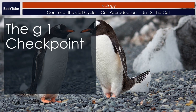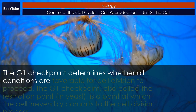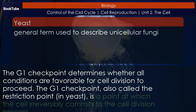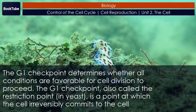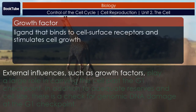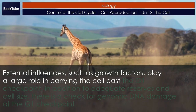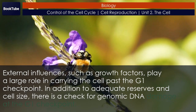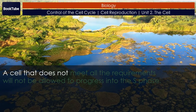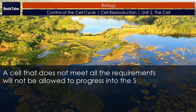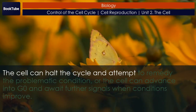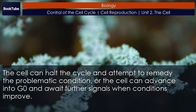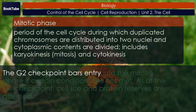The G1 checkpoint determines whether all conditions are favorable for cell division to proceed. Also called the restriction point in yeast, it is where the cell irreversibly commits to cell division. External influences such as growth factors play a large role in carrying the cell past the G1 checkpoint. In addition to adequate reserves and cell size, there is a check for genomic DNA damage. A cell that does not meet requirements will not progress into S phase, and can halt or advance into G0.